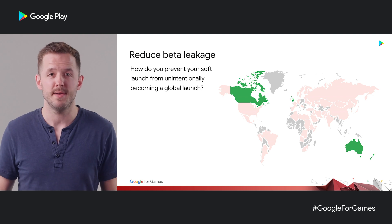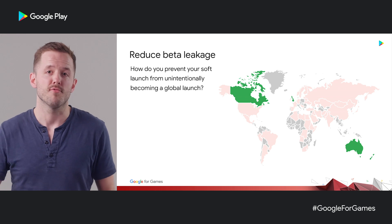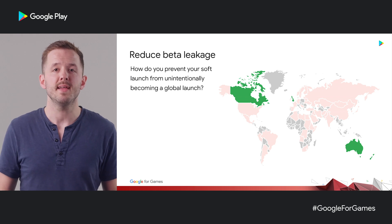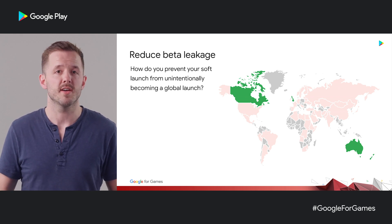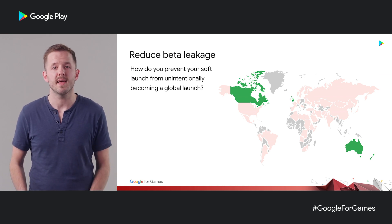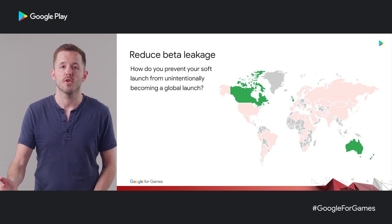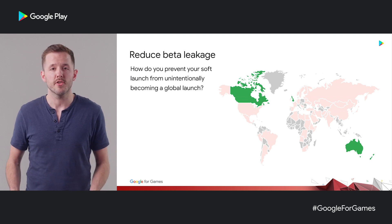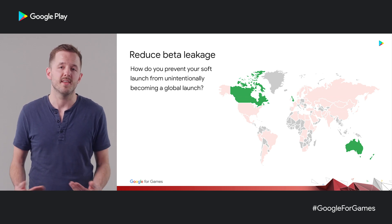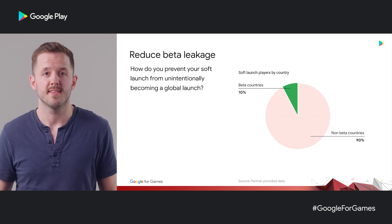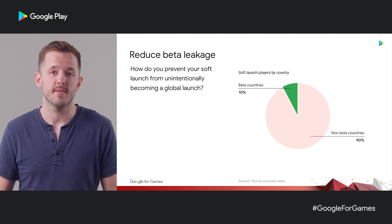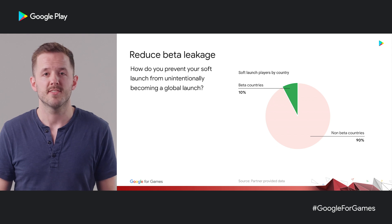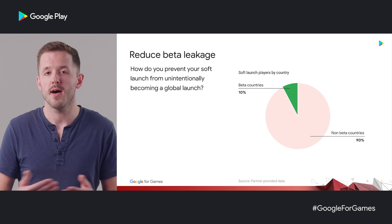A second use case is reducing beta leakage. This happens when a game is soft launching and running a beta in a few countries before rolling it out to more countries. The purpose of a beta like this is to be limited — your game isn't really ready for the whole world. Soft launching lets you get feedback from players and gather useful information, such as determining how many servers you're likely to need when you go to production. Beta leakage is when instead of having a few territories playing the game, you have people from all over the world playing because they've got hold of a copy. This can be really hard for you as a game developer — you can't accurately project how many servers you're going to need, and you can't understand the makeup of your users and their typical behavior. One partner we worked with saw a real issue with this: in a past Android soft launch, 90% of their beta players came from non-beta countries. Android is an open platform, which is one of its great strengths, but it means that sharing APKs is quite straightforward. So the challenge is: how do you prevent your soft launch from unintentionally becoming a global launch?